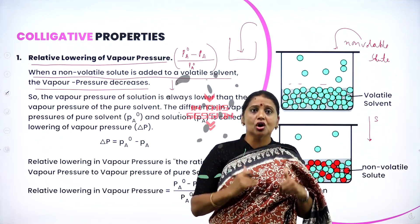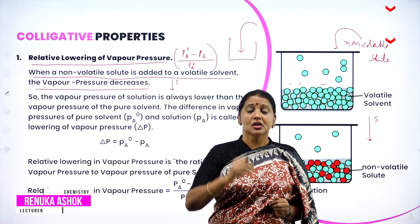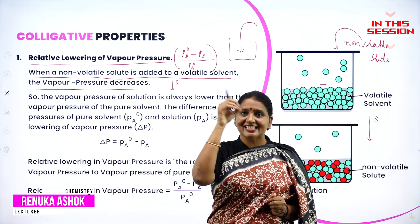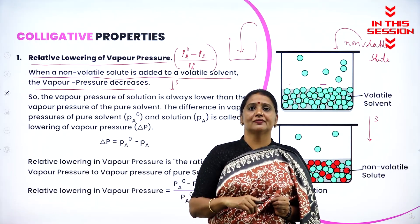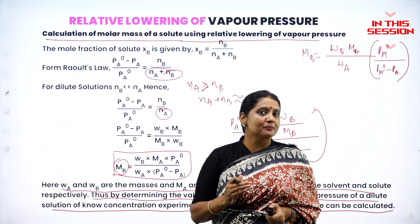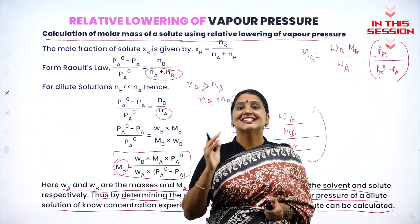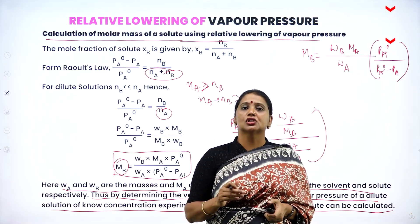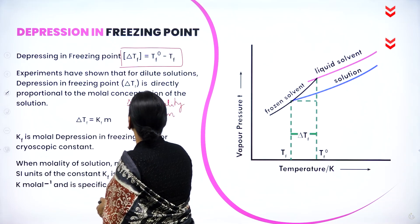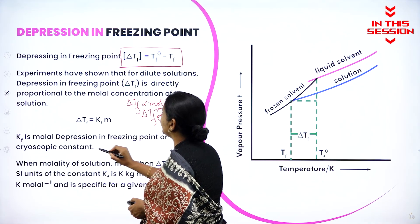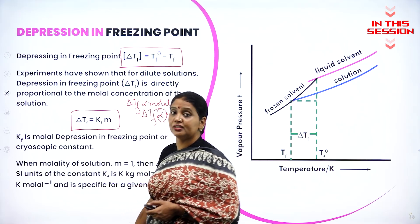After adding solute to solvent, the mixture will become a solution. Therefore, the solution vapor pressure is less than that of the vapor pressure of the pure solvent. The relative lowering of vapor pressure depends upon the number of solute particles, not on the nature of the solute particle. Delta Tf is directly proportional to M; removing the proportionality sign gives Delta Tf equal to Kf into M.